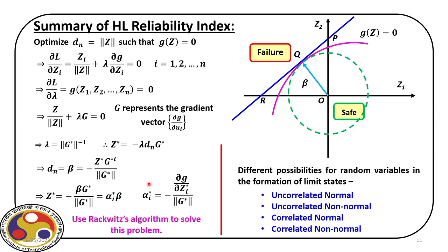For the final case of correlated non-normal random variables, we combine all the techniques: uncorrelated normal, uncorrelated non-normal through equivalent normalization, and eigenanalysis or Cholesky decomposition to handle correlation. Combining all three gives the solution for the most general case of correlated non-normal random variables.